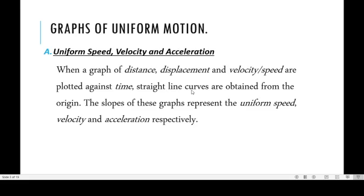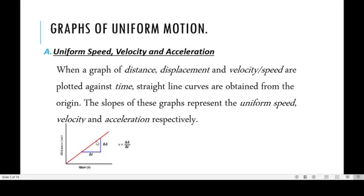For all these graphs, they are all straight line graphs — the curves of the graphs are straight lines. This is one thing that differentiates uniform motion from non-uniform motion. Here we have a distance-time graph starting from the origin, and this is a straight line graph.